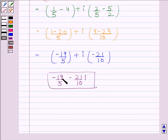Here, A is equal to -19/5 and B is equal to -21/10.